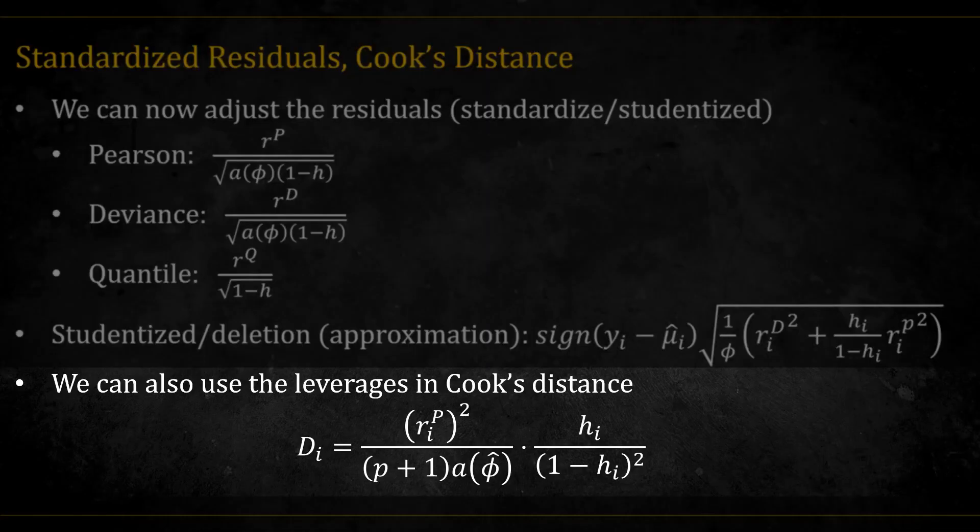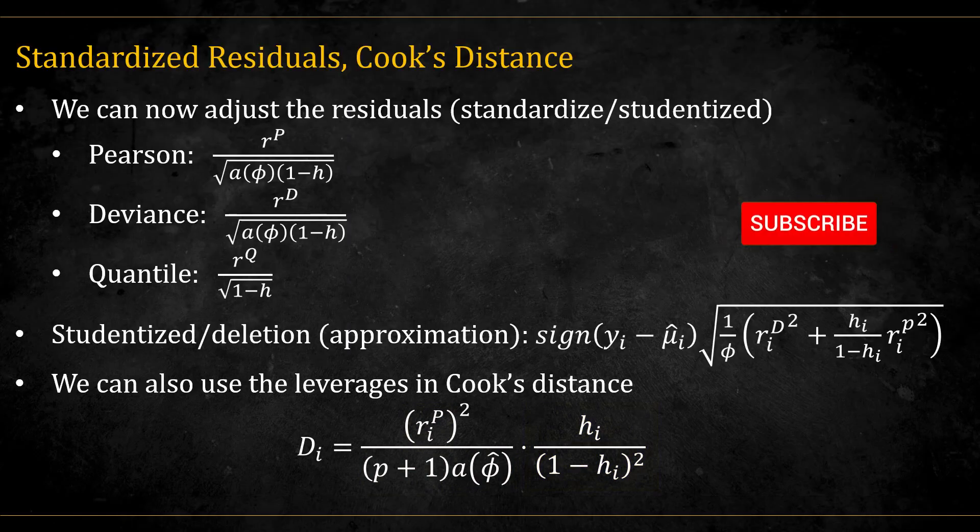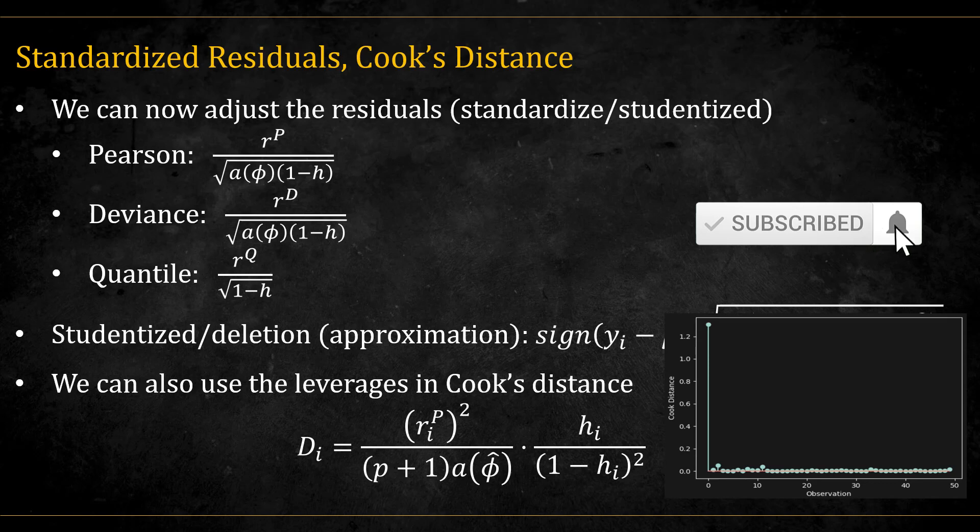We can also use the leverages in Cook's distance. The formula is exactly the same as for the linear models. It takes into consideration both the residual of an observation, adjusted by the number of coefficients and the overall variance, and the leverage that determines how much this point is in a strategic place. We can again plot the Cook's distances against the observation index and see if we spot any outliers.